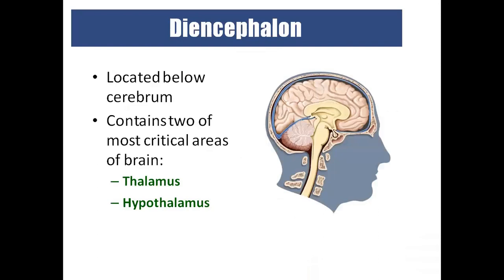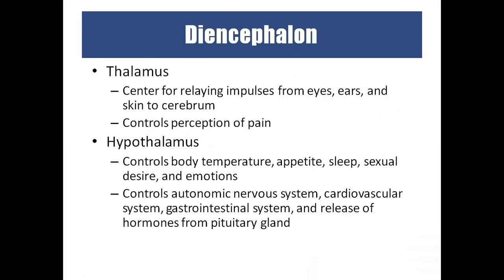The diencephalon consists of two parts — thalamus and hypothalamus. The thalamus acts as a sensory relay station where all sensations from the eyes and ears wait before being sent to their respective brain areas. The hypothalamus controls temperature, appetite, sleep, sexual desire, and emotion, and also controls the autonomic nervous system.